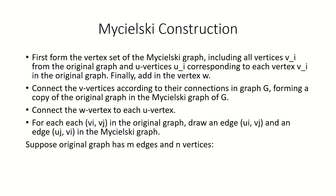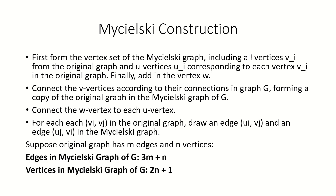Note that these rules mean that if a graph G has n vertices and m edges, its Mycielsky graph will have 3m plus n edges and 2n plus 1 vertices. Feel free to pause the video and work out why this is true for yourself.